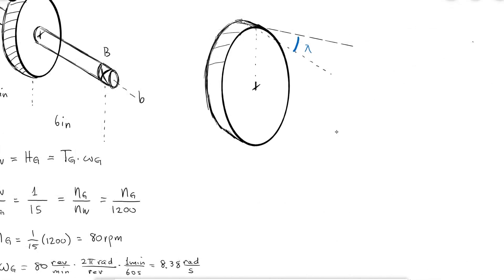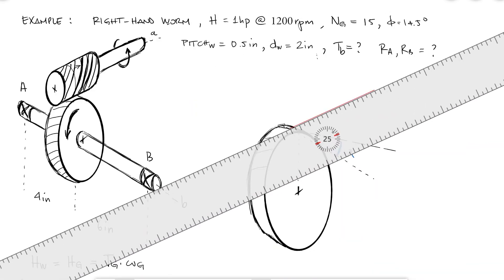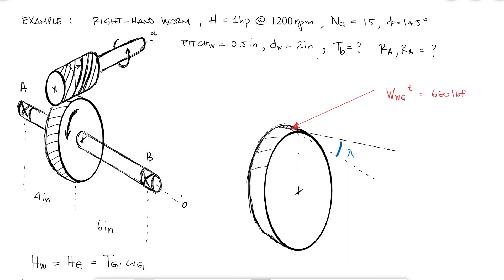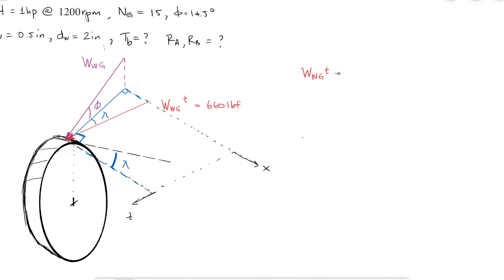If the worm is rotating counterclockwise, its threads push the teeth at the top of the gear towards the left, meaning the gear also rotates counterclockwise. The tangential force on the gear is therefore facing left. The overall force must be perpendicular to the teeth and form a pressure angle with respect to the XZ plane. From our expressions, the tangential component equals the total force times cosine of phi times cosine of lambda, so I need lambda.